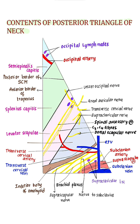Nerves of the subclavian triangle: roots and trunks of the brachial plexus — you can see the roots and trunks of the brachial plexus here. Also the suprascapular nerve, arising from the upper trunk, and the nerve to subclavius.